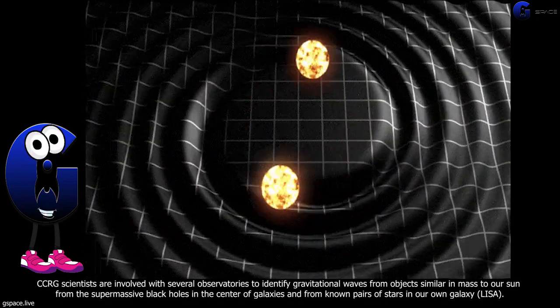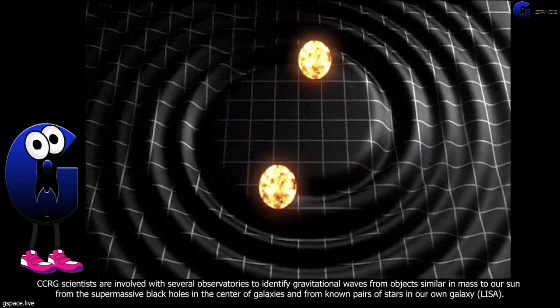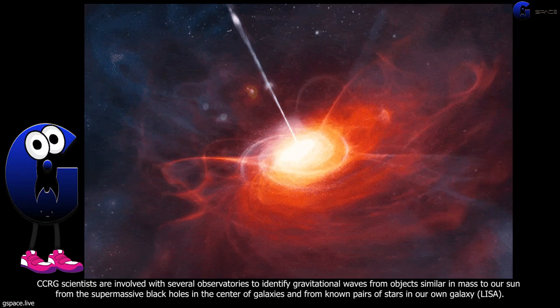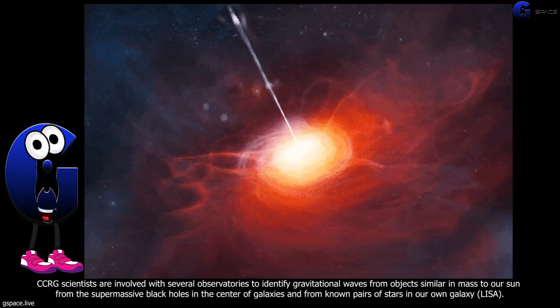CCRG scientists are involved with several observatories to identify gravitational waves from objects similar in mass to our sun, from the supermassive black holes in the center of galaxies, and from known pairs of stars in our own galaxy.